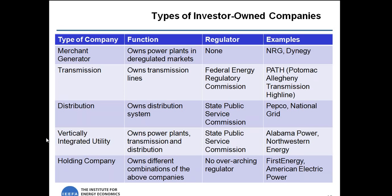Some regions still have vertically integrated companies that perform all three functions of power generation, transmission, and distribution — examples include Alabama Power, a subsidiary of the Southern Company, and NorthWestern Energy in Montana. Even though the point of deregulation was to separate out the different functions, there's nothing to stop one company from owning all these different types of companies under one holding company structure. There is no overarching regulator of a holding company, even though the different subsidiary pieces may be regulated by different entities.